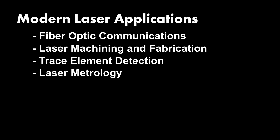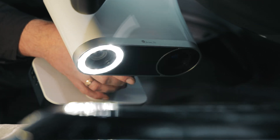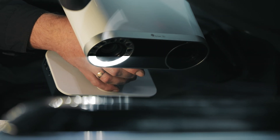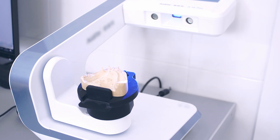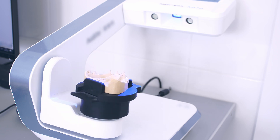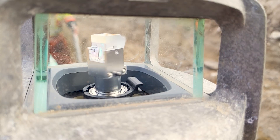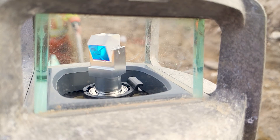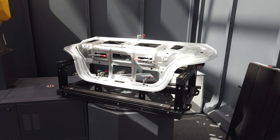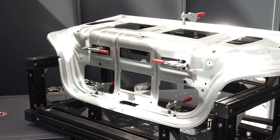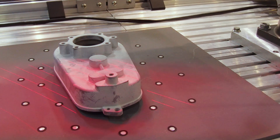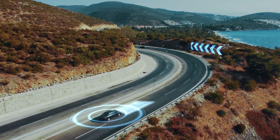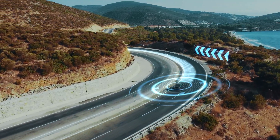Laser Metrology. This is the use of lasers to measure various physical properties such as distance, speed, angle, temperature, pressure, or force. The lasers can produce very accurate and stable beams of light, which can be reflected, refracted, or interfered by the object or phenomenon being measured. By detecting and analyzing the changes in light, the physical property can be calculated. Laser metrology is widely used for engineering, surveying, navigation, and research applications.